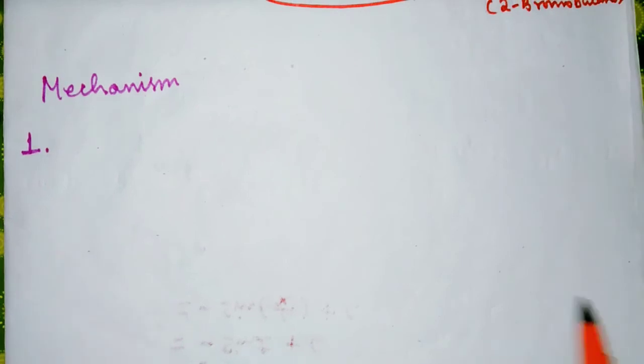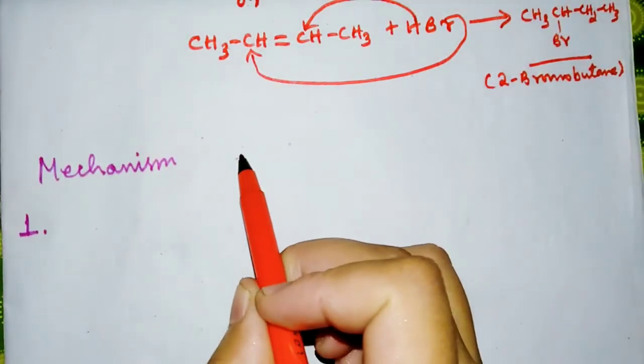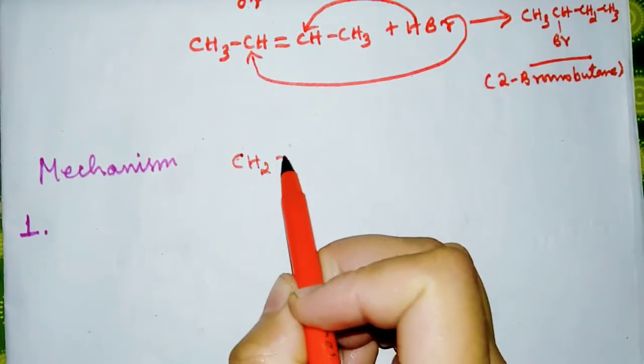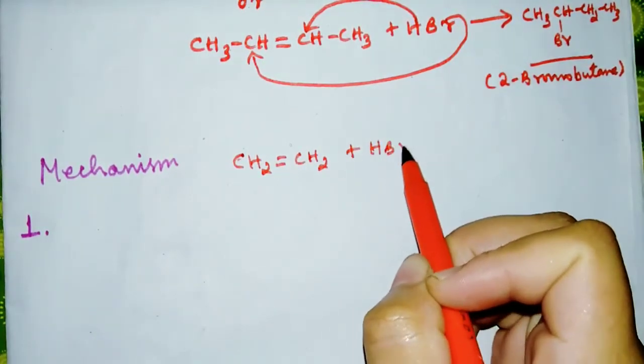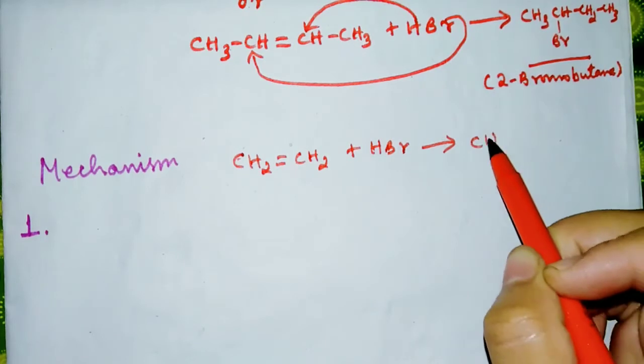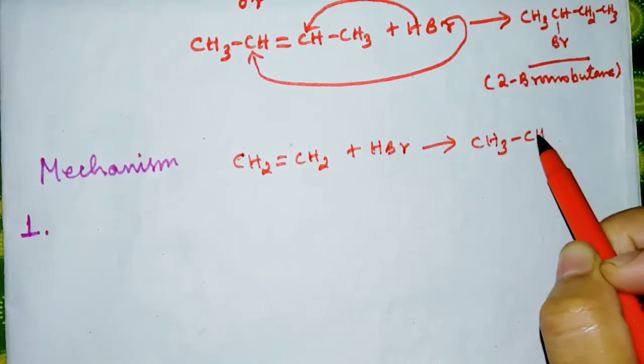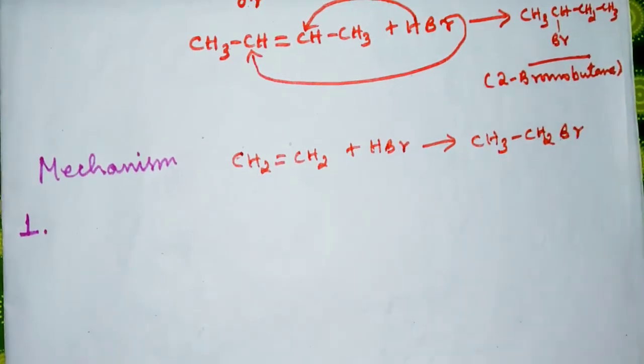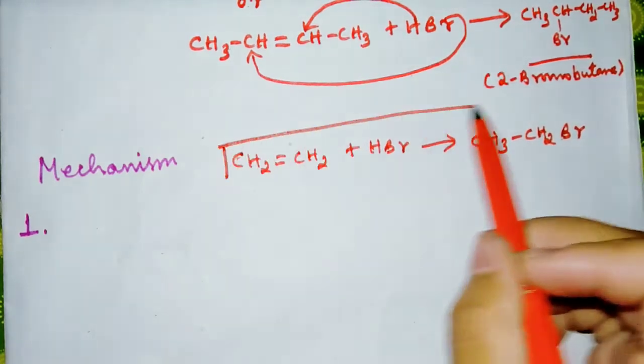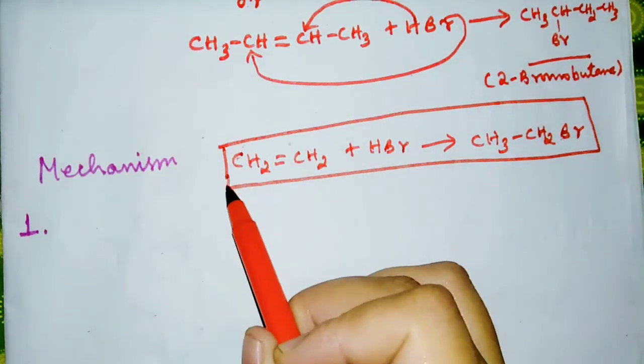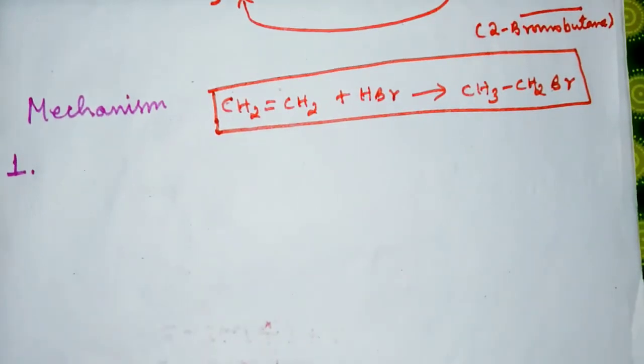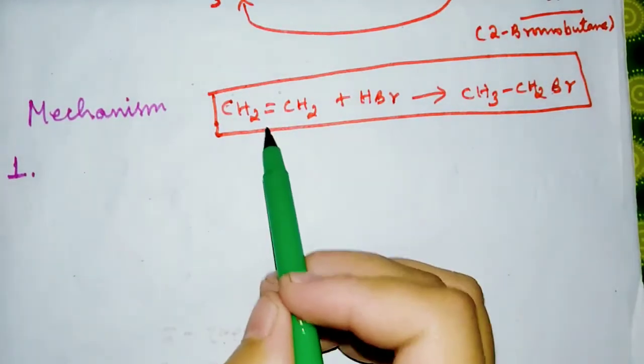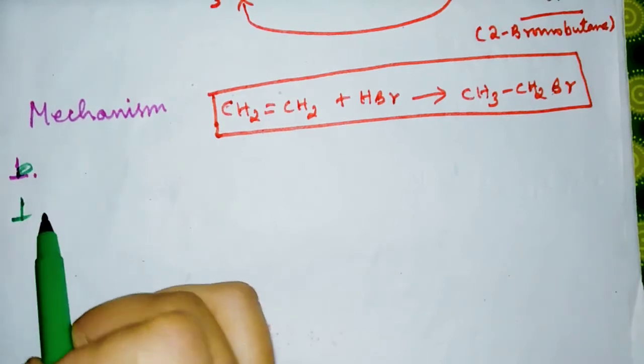Now we come to the mechanism for this chemical reaction: CH2=CH2 + HBr → CH3-CH2Br. Let us study the mechanism of this chemical reaction. In step one, your ethylene...